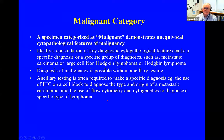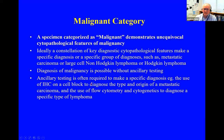The malignant category is applied when the lesion demonstrates unequivocal cytopathological features of malignancy. There should ideally be a constellation of key diagnostic cytopathological features to make a specific diagnosis — such as metastatic carcinoma, large cell non-Hodgkin's lymphoma, or Hodgkin's lymphoma — without discrepant features. Diagnosis of malignancy is possible without ancillary testing, but ancillary testing is often required to make a specific diagnosis. For example, immunohistochemistry on the cell block can diagnose the type and origin of a metastatic carcinoma; flow cytometry is very important in confirming lymphoid malignancies; and cytogenetics can diagnose specific types of lymphoma.